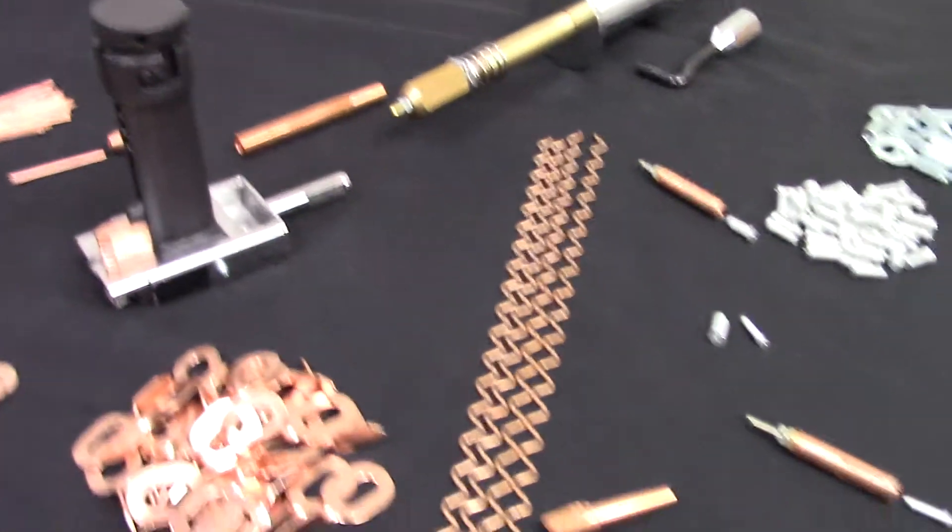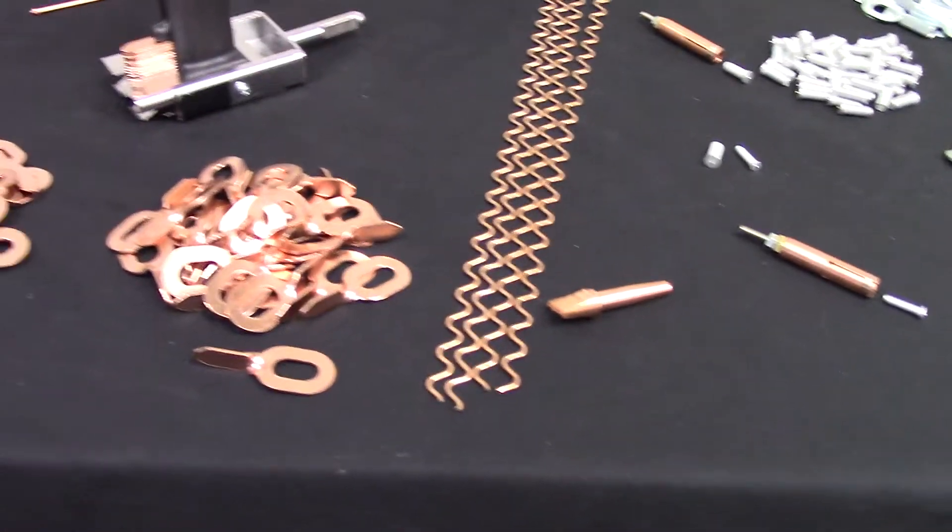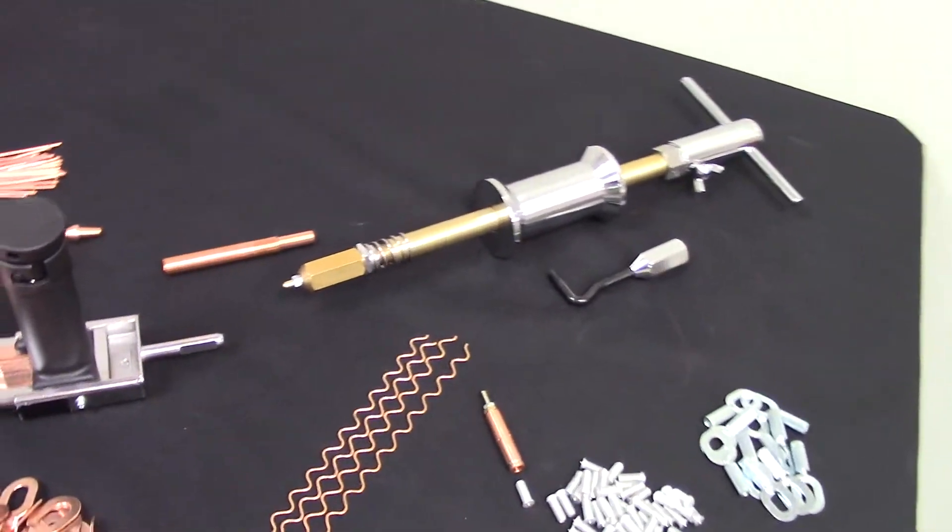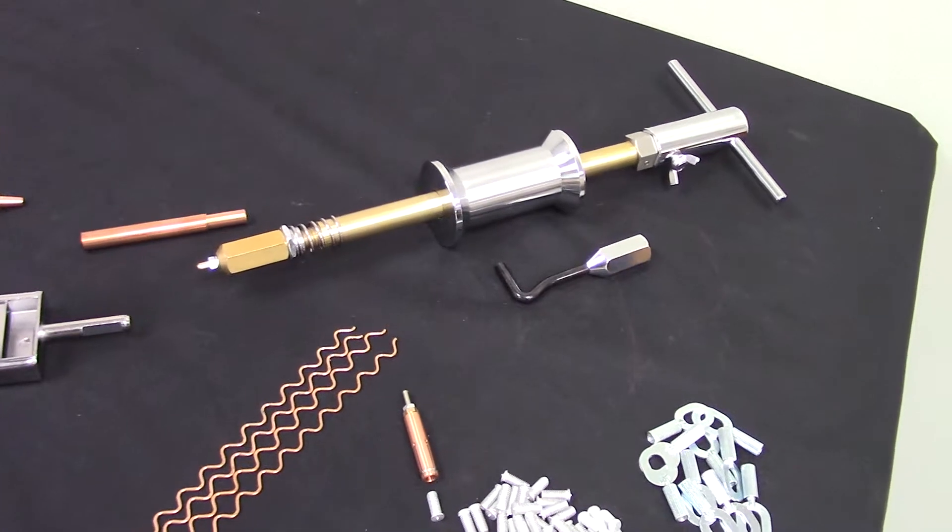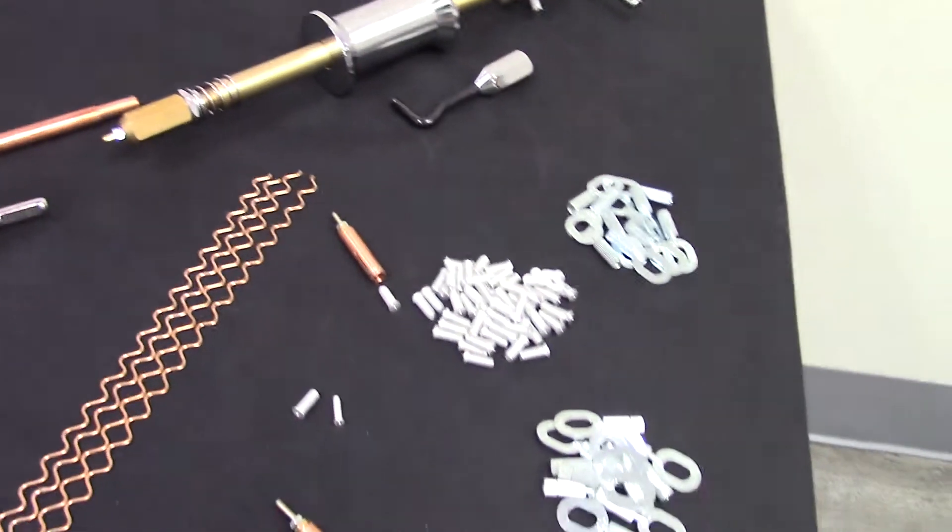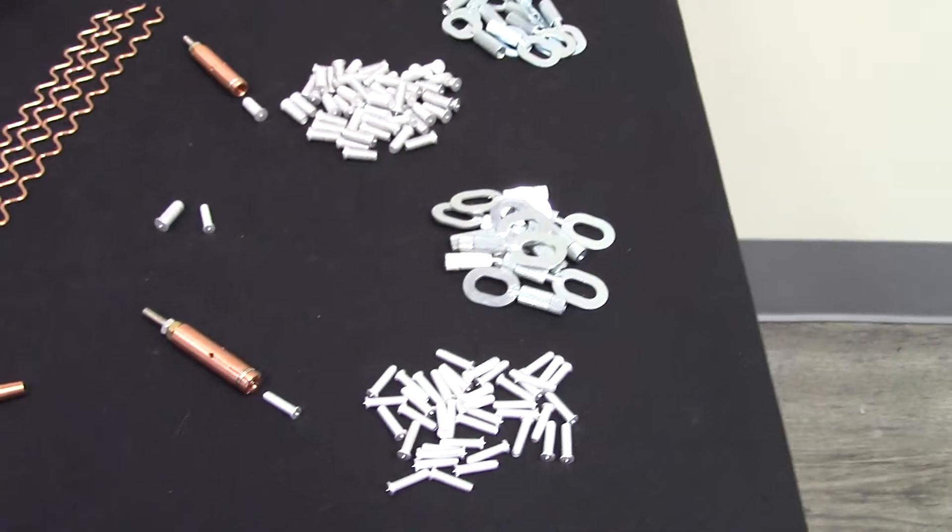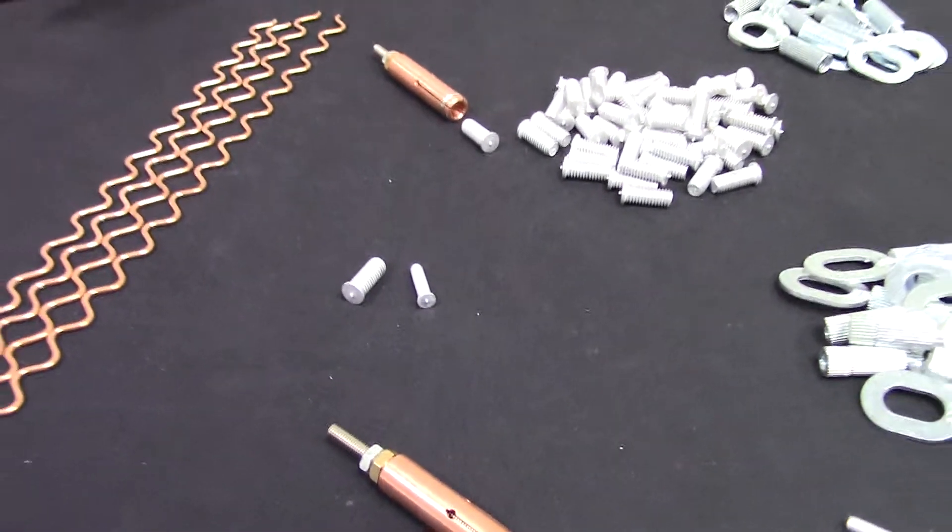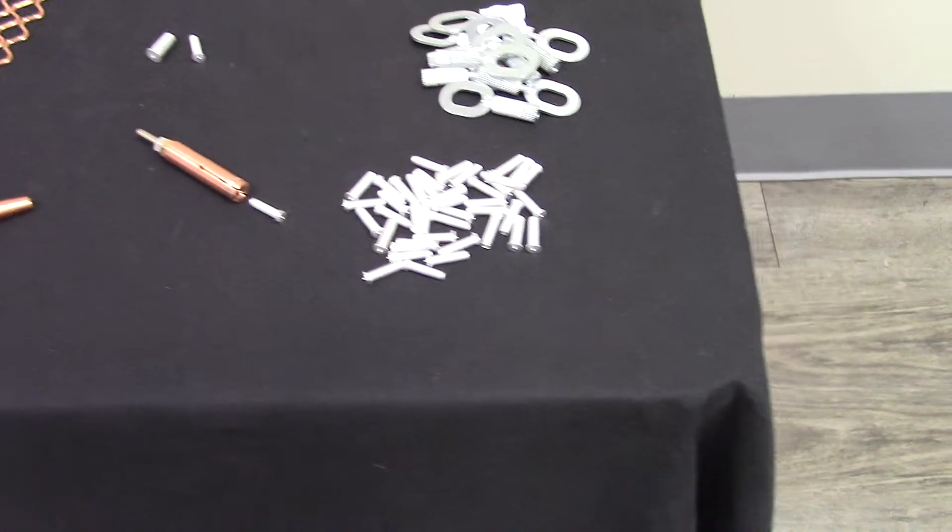It also includes wiggle wire and a wiggle wire attachment, and a weld-on slide hammer for light body repairs. On the aluminum side, this unit features both 4mm and 6mm aluminum studs as well as aluminum pulling tabs.